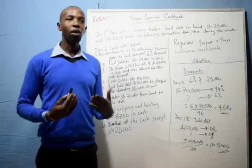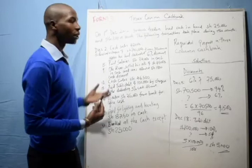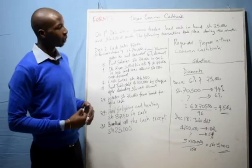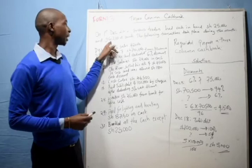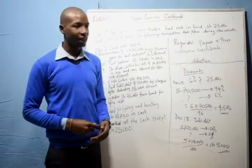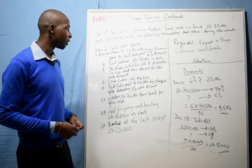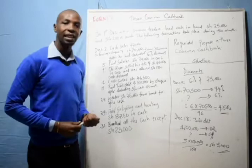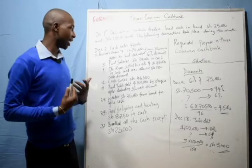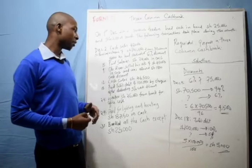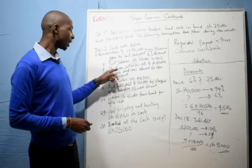Today I want to show you an example. On 1st December 2006, Swara Traders had cash in hand 25,000 shillings and 56,200 shillings at bank. The following transactions took place during the month: December 2nd, cash sales 42,000. 5th, received a check of 70,500 from Mwawura after he had deducted 6% discount. You must understand that language — that is, after he had deducted 6% discount. On 8th, paid salaries 24,000 in cash.